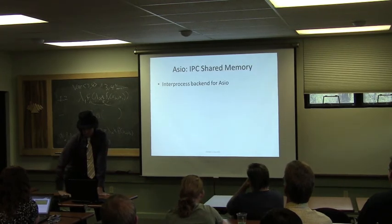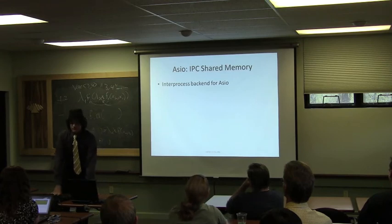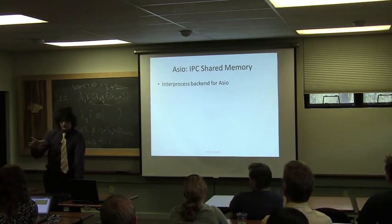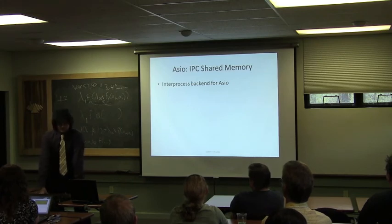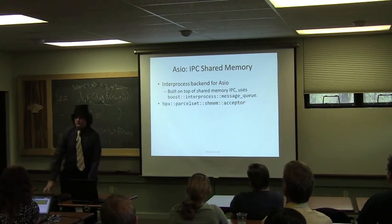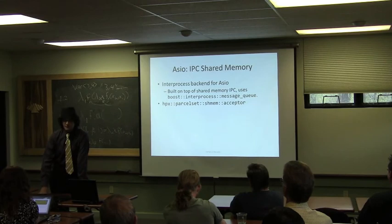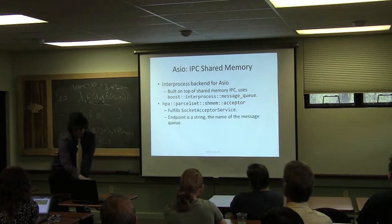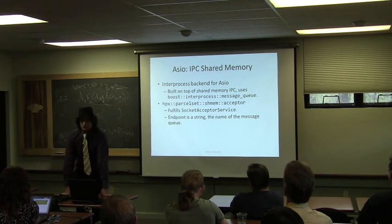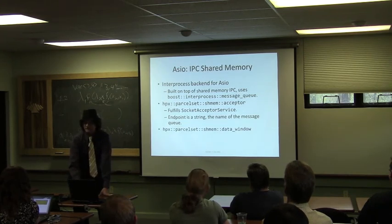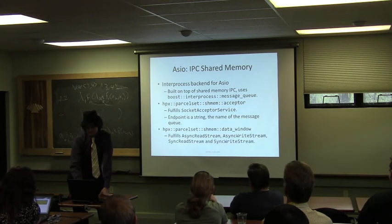Now I'm going to talk about two Asio backends we've written in the context of our HPX code framework. The first is an inter-process backend that uses Boost.Interprocess message queue to communicate between two processes on a single machine — a good bit faster than using Unix sockets. We have an acceptor similar to the TCP acceptor, mocked up to interoperate in the same code where we had been using Asio for TCP networking. It fulfills the socket acceptor service model. The endpoint is just a string — the name of the message queue — and a data window represents our socket equivalent.